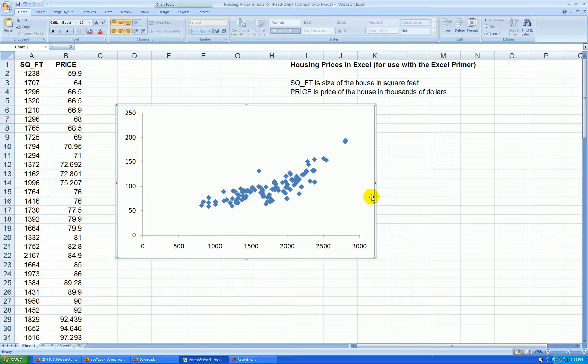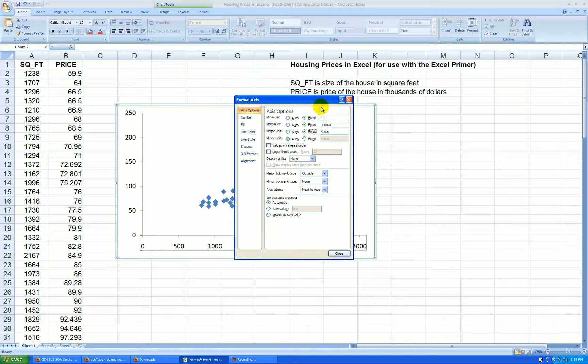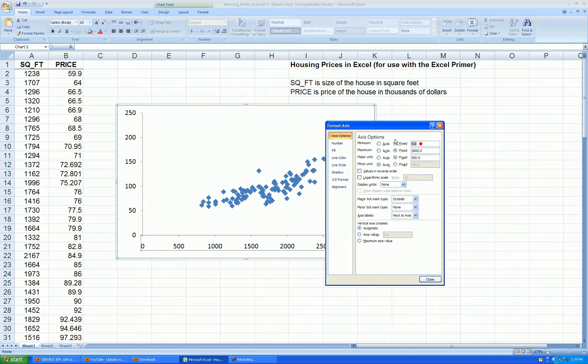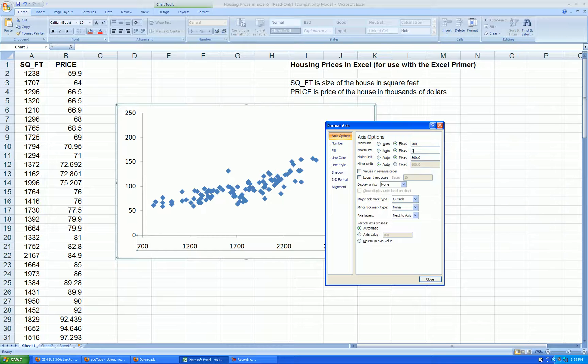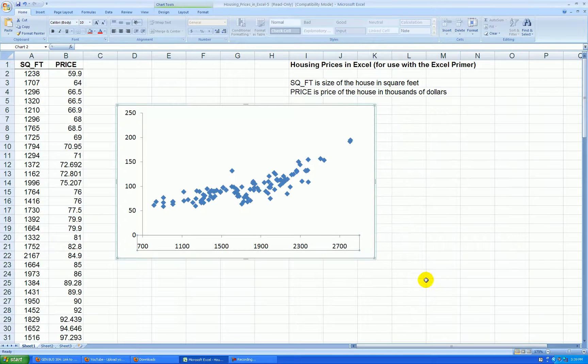Let's rescale the plot. The X axis, let's right-click on that, format, and change the minimum. Let's start the minimum at 700 and let's go up to 2900 by increments of 400. Press OK. We have all the data. We got rid of most of the empty white space.